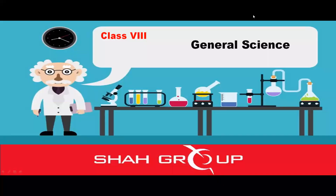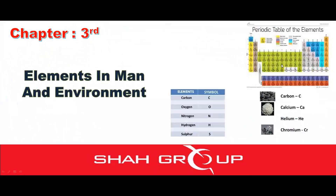Assalamu alaikum dear students. We had started the first unit syllabus and we are working on the chemistry section from our first unit syllabus. I had explained chapter number 3 from your chemistry section. The chapter name is Elements in Man and Environment. I was explaining chapter number 3 in the biology section and had explained some of the topics. The remaining topics I will explain to you in this lecture. So let's start the topic.